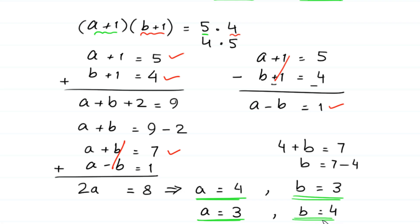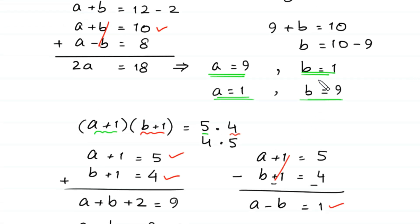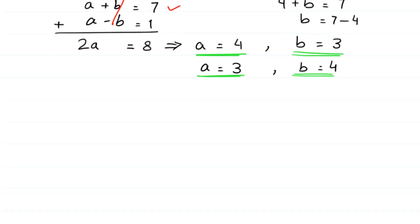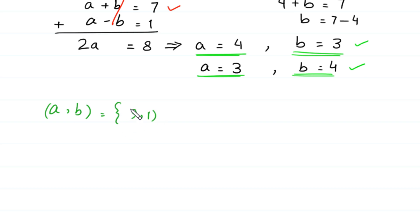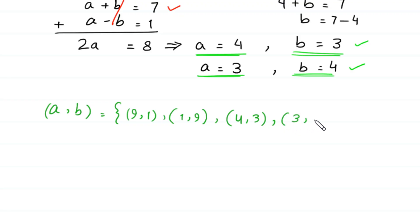So we have four pairs of solutions. The solutions for (a, b) are: (9, 1), (1, 9), (4, 3), and (3, 4).